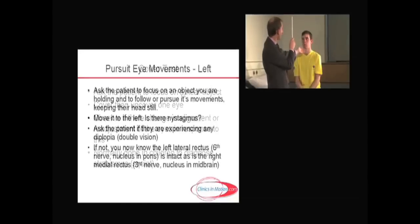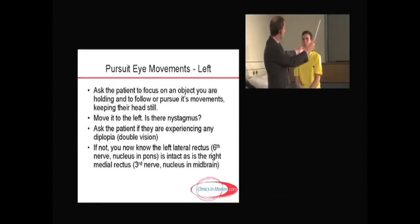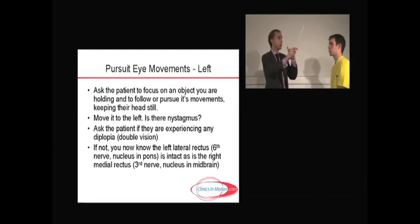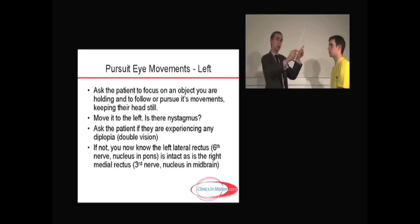Ask the patient to follow the stick with their head still and look to the left. Then ask yourself: do I see nystagmus? No. And ask the patient: do you see one or two objects? In the patient's left eye, he's using the lateral rectus muscle, supplied by the sixth nerve, with its nucleus in the pons. In his right eye, he's using the medial rectus muscle, supplied by the third nerve, with its nucleus in the midbrain.